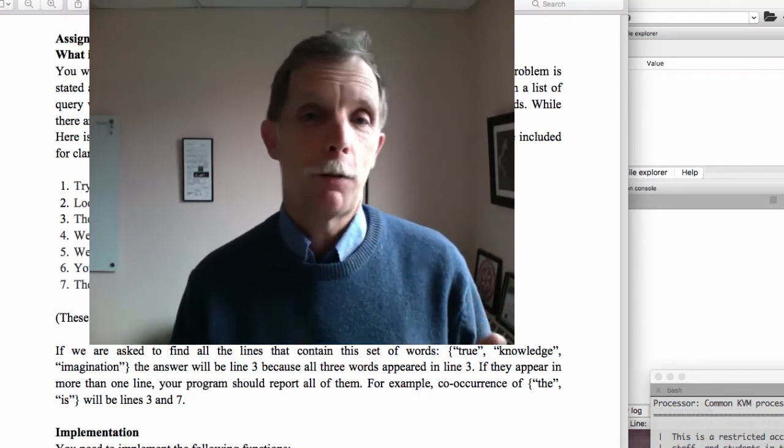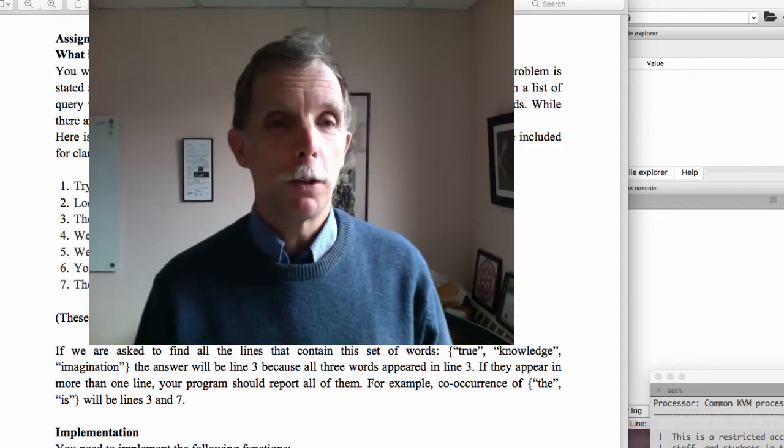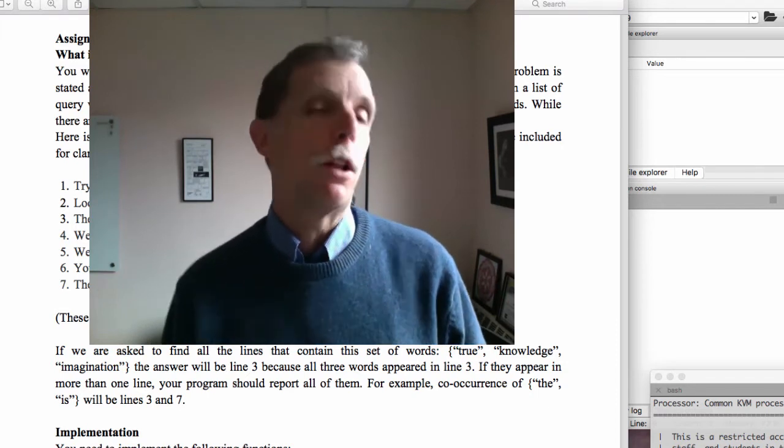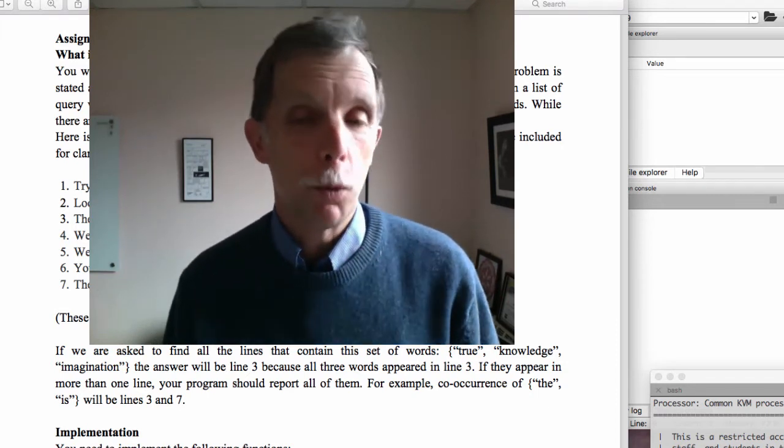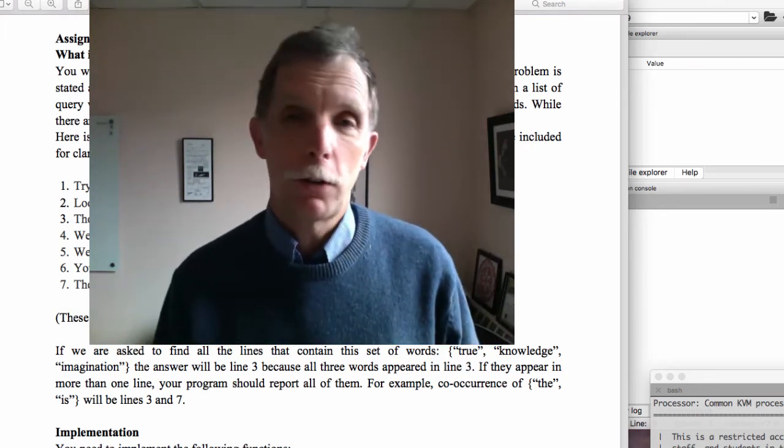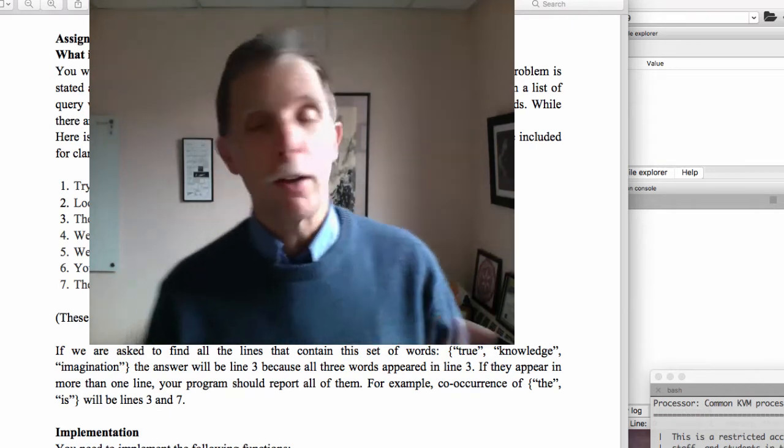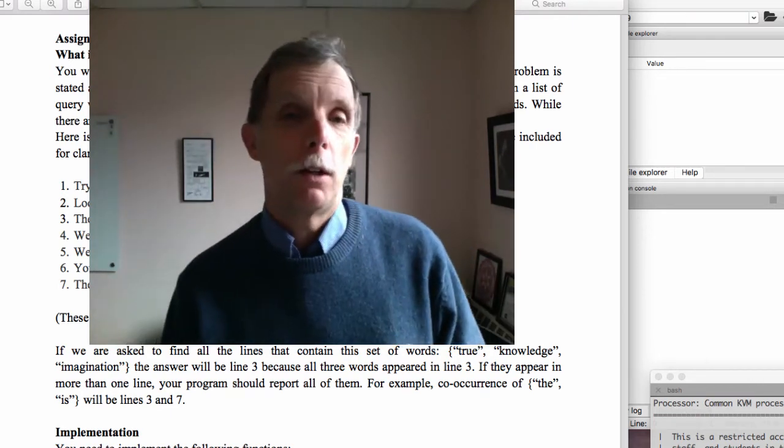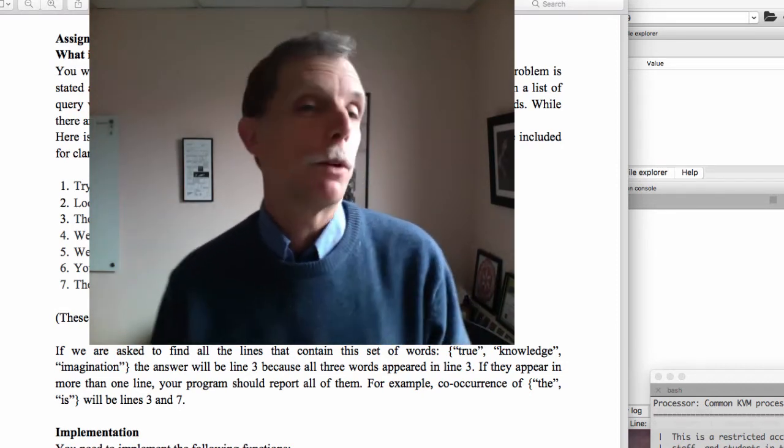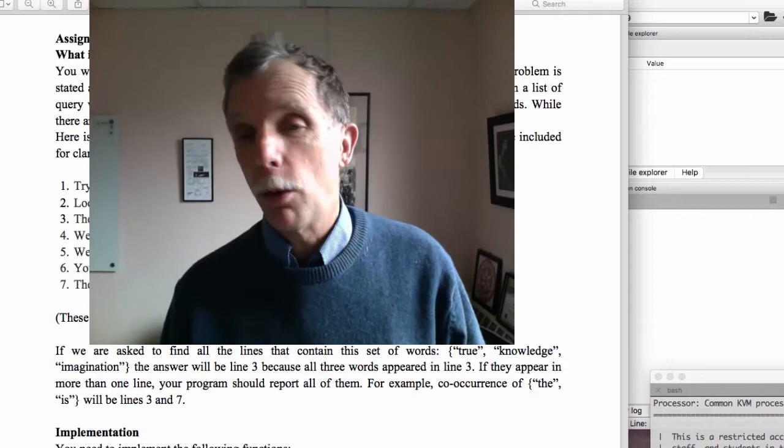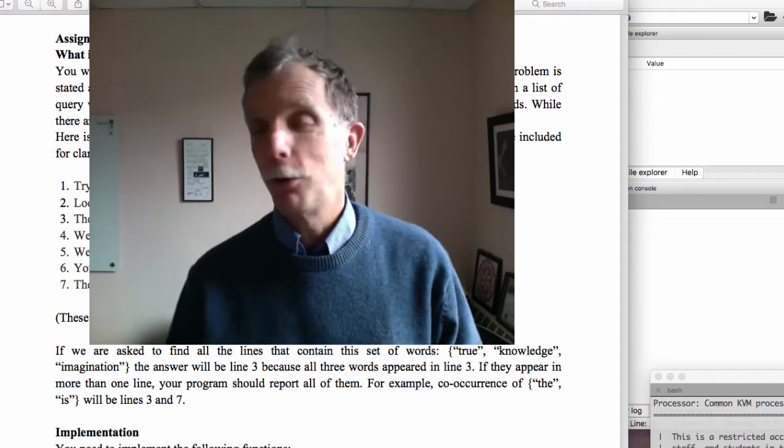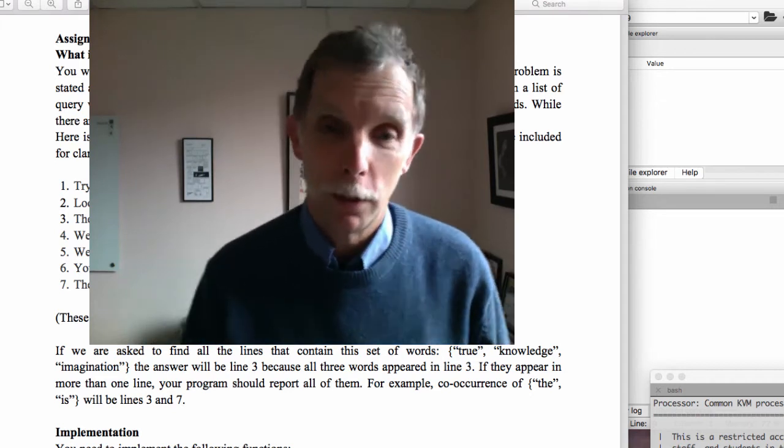So we're going to have our dictionaries where the key is a word and the value is the set of lines where that word appears. So if the word occurs in lines one, three, and seven, then our dictionary at that word will have a set with the numbers one, three, and seven. And by the way, we start our line numbers on one this time, not on zero, so the first line will be line number one. You want to watch out for that.